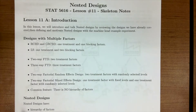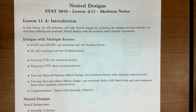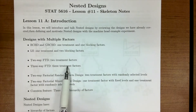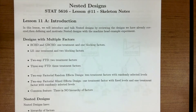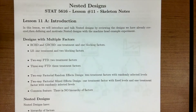The common feature of all these designs we've talked about so far is that there's no hierarchy of factors. What I mean by that is when we're trying to figure out our treatments, we're able to cross them at the lower level. So let's say we had two treatments A and B, where each of them had some number of levels. We could then assume that the levels of treatment A were identical for all the levels of treatment B.